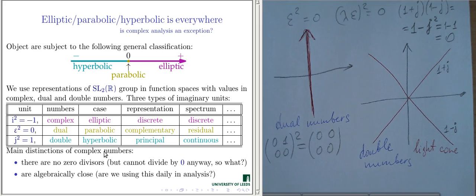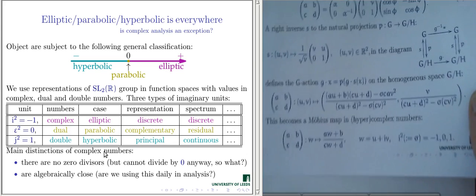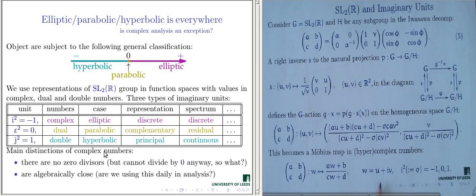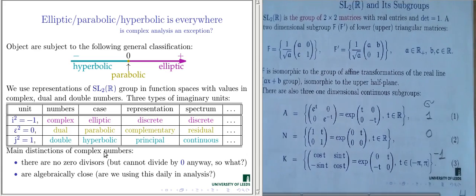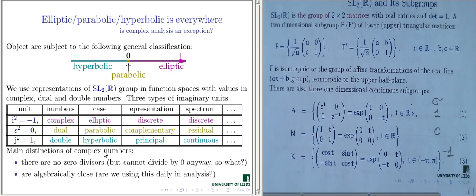That was justification for investigating these numbers at all. But I wish to stress one point that may be hidden in the previous presentation. When we arrive at these numbers through linear fractional transformations, we do not choose to consider them by hand — they simply appear when we treat subgroups A, N, and K on an equal basis. Typically in mathematics, the compact subgroup K of SL(2,R) receives much greater attention than the other subgroups A and N. If we apply an equality policy to all subgroups, we must consider the corresponding hyper-complex numbers as well.